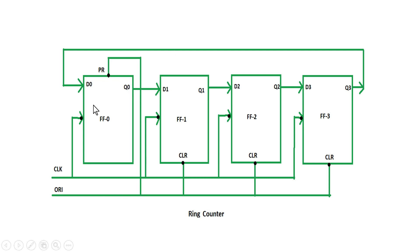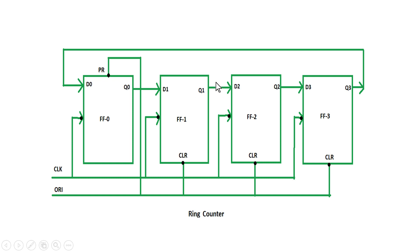All the flip-flops in this diagram are negative-edge triggered. So on a negative edge of the clock signal, the 1 will be passed to the output of flip-flop 1, and Q3 which was 0 will be passed to the output of flip-flop 0. So Q0 will become 0, Q1 will become 1, and Q2 and Q3 will remain 0.